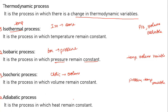Next is the adiabatic process. It is the process in which heat remains constant — the heat energy does not exchange with the surrounding. Therefore, heat energy Q is equal to constant. This type of process is called an adiabatic process.